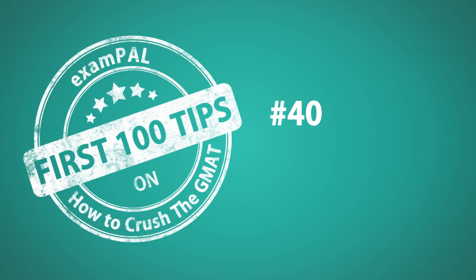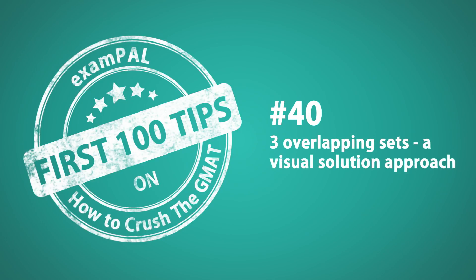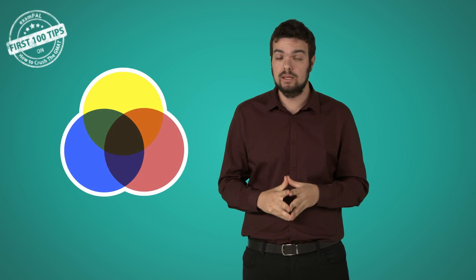Number 40. Three overlapping sets, a visual solution approach. The question can be solved visually, by drawing a Venn diagram using three circles. Example.